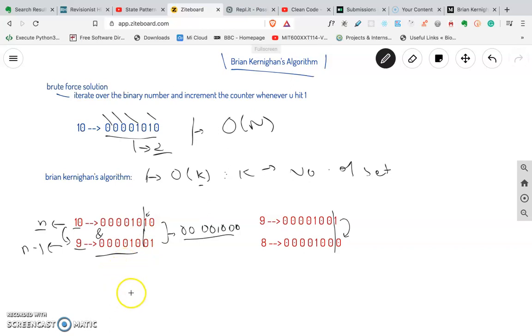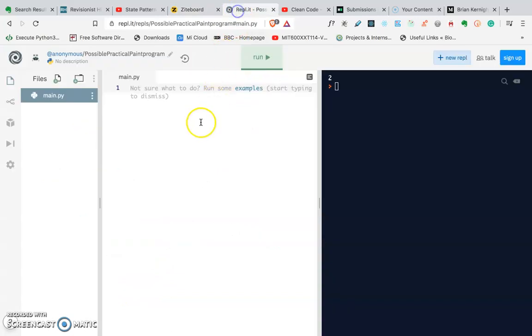I hope you understood that. Let's move to an example and let's write the program down. Okay, so I have a Replit open here. Let's say the function name is count set bits, which takes a decimal number n.